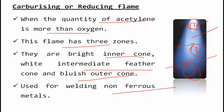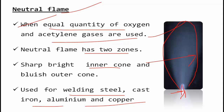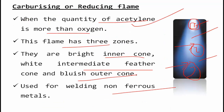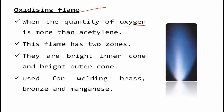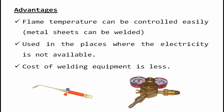The third is the oxidizing flame. In this case, oxygen is more than acetylene. This flame has two zones: the bright inner cone and the bright outer cone. This type of flame is used for welding brass and manganese. So depending on the application and need, we choose the appropriate gas proportion.